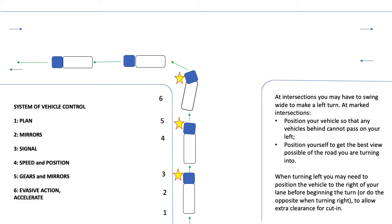Vehicle positioning is critical in heavy combination vehicles. At intersections, you may have to swing wide to make a left turn. At marked intersections, position your vehicle so that any vehicles behind cannot pass on your left. Position yourself to get the best view possible of the road you are turning into. When turning left, you may need to position the vehicle to the right of your lane before beginning the turn, or do the opposite when turning right to allow extra clearance for cut-in.